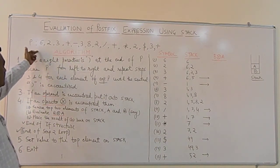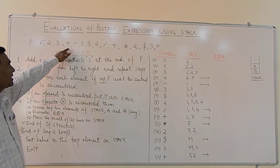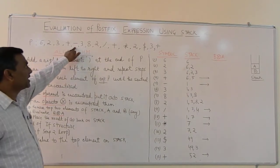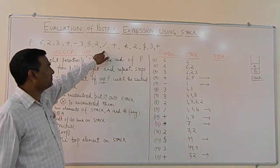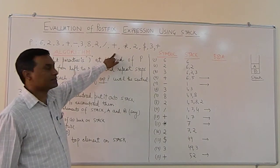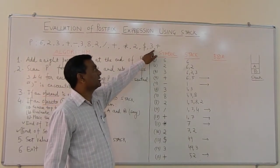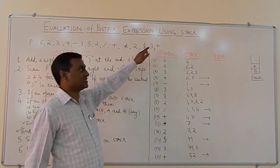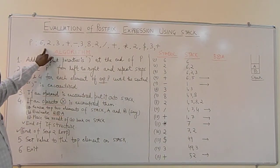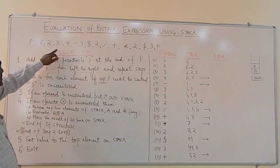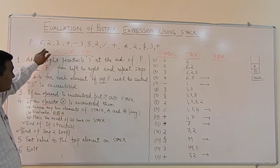Let us say this is P. It is containing 6, 2, 3, plus, minus, 3, 8, 2, divided by, plus, multiply, 2, dollar, 3, and then plus. We are using a comma here to separate these symbols.